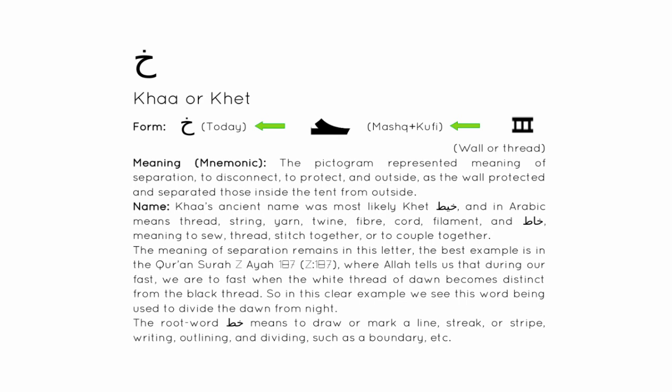The meaning of separation remains in this letter. The best example is in the Qur'an, Surah 2, Ayah 187, where Allah tells us that during our fast we are to fast when the white thread of dawn becomes distinct from the black thread, using this word to divide the dawn from night. The root word Khat means to draw or mark a line, streak or stripe, writing, outlining and dividing, such as a boundary.